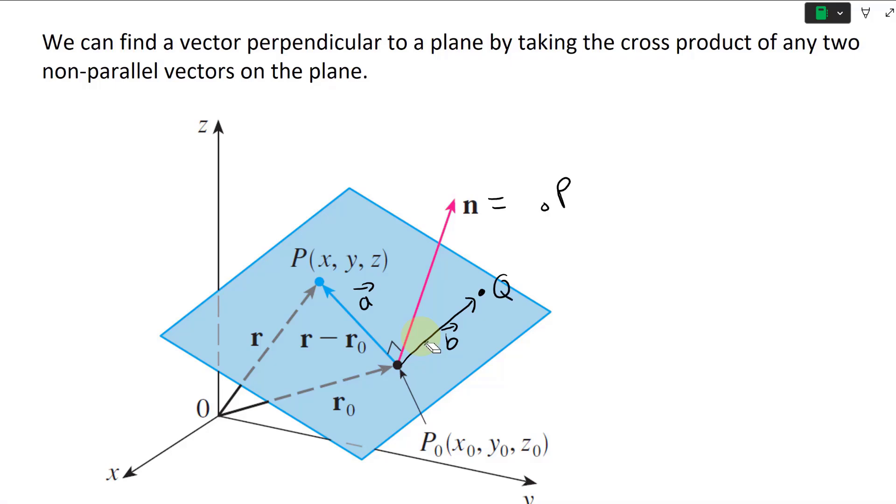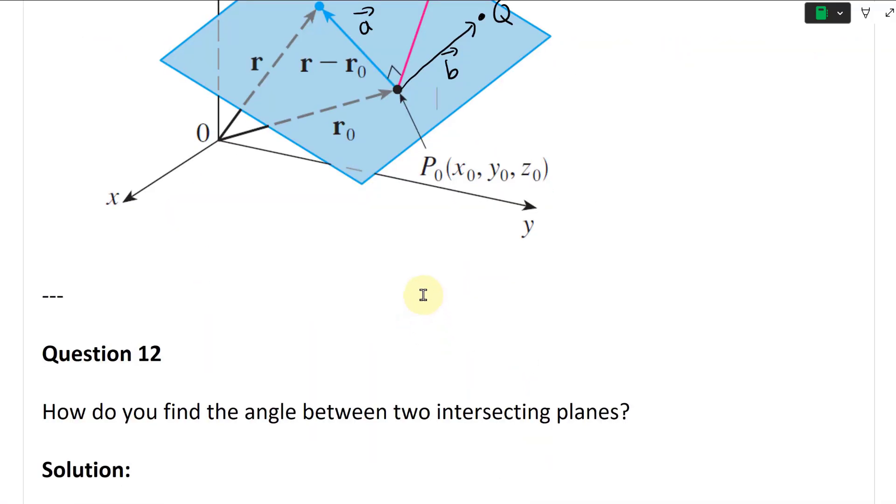So this point, let's say this point Q, like that. So then this is just going to be a cross b vector. Yeah, so that's just easier and neater to do that. And that's the perpendicular vector.